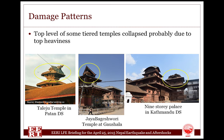If it had fallen, the heavily embellished piece would have destroyed half of the building. Similarly, the top level of Jaya Bageshwari temple of Gausala Kathmandu has also toppled down. And the famous nine-story palace, Basantapur Tower of Kathmandu Darbar Square, also lost its top two floors in the earthquake.